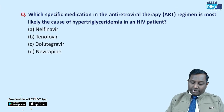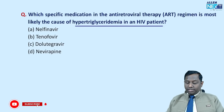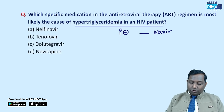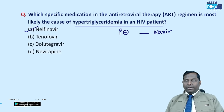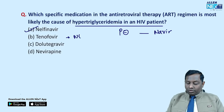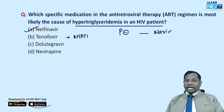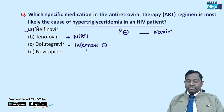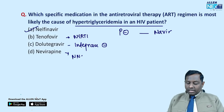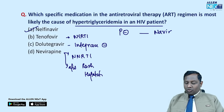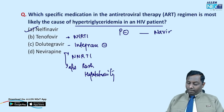In antiretroviral therapy, which drug is most likely to cause hypertriglyceridemia? Protease inhibitors — all ending in '-navir' (e.g., nelfinavir) — are maximally associated with hypertriglyceridemia. Tenofovir is a nucleotide reverse transcriptase inhibitor. Dolutegravir is an integrase inhibitor. Nevirapine is a non-nucleoside reverse transcriptase inhibitor (NNRTI) mainly associated with rash and hepatotoxicity.